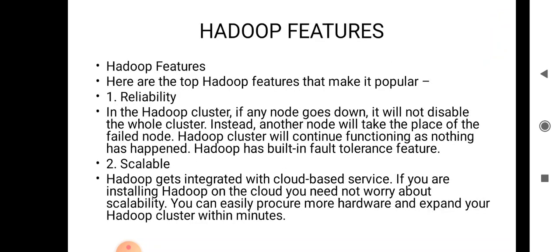Moving on to Hadoop features — some of these we have already studied in our previous lecture. Reliability: in a Hadoop cluster, if any node fails it will not bring down the whole cluster. Instead, that particular node will fail and we can retrieve data from other nodes. Whenever a user wants to retrieve particular data and it cannot be retrieved from one node, it can be retrieved from any other node because we have multiple copies of that data.